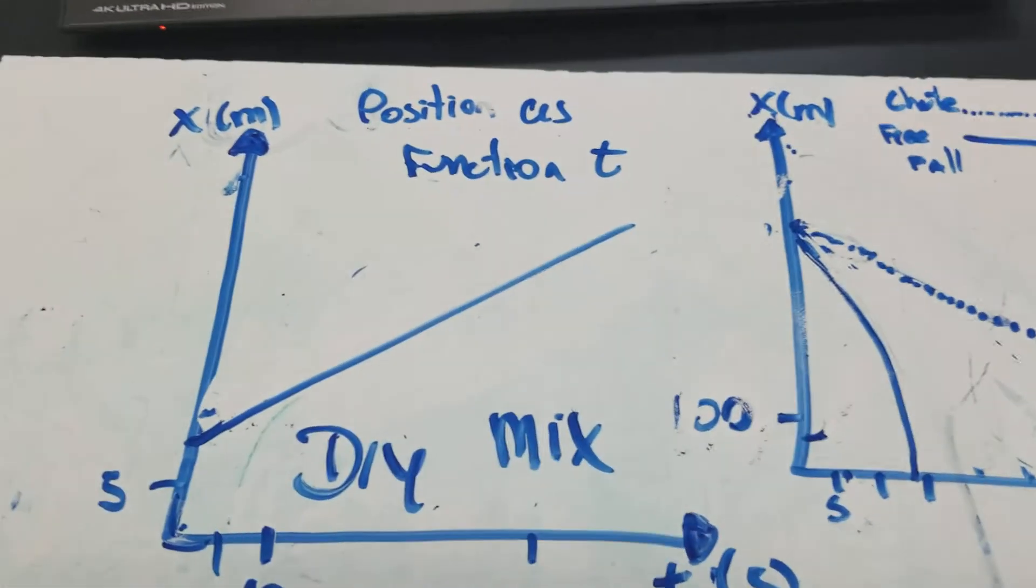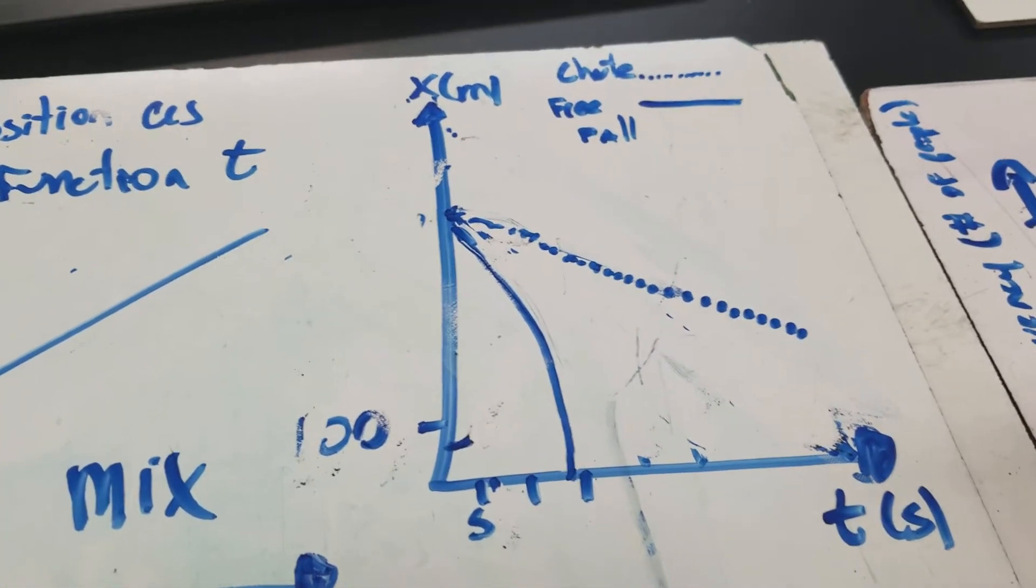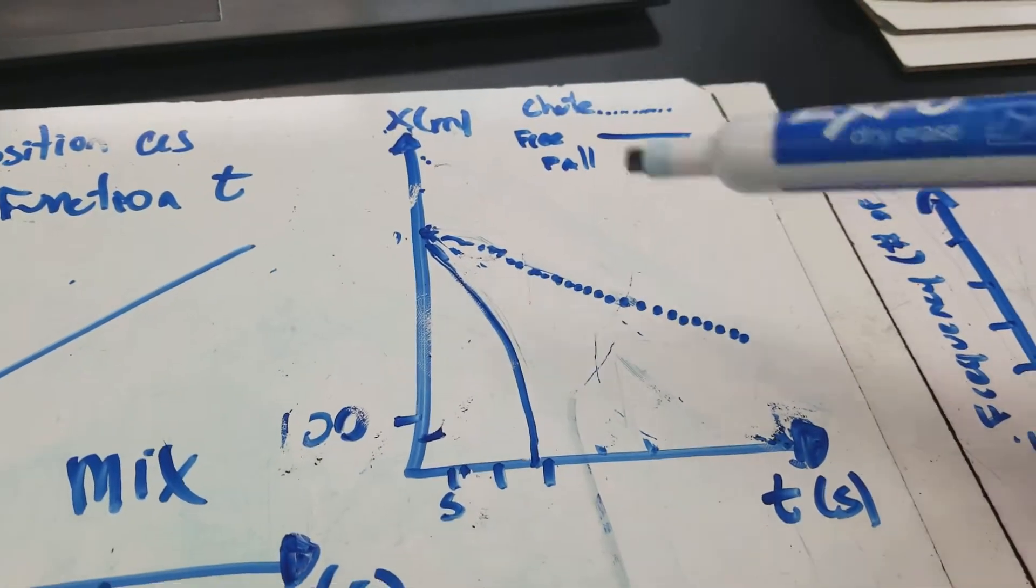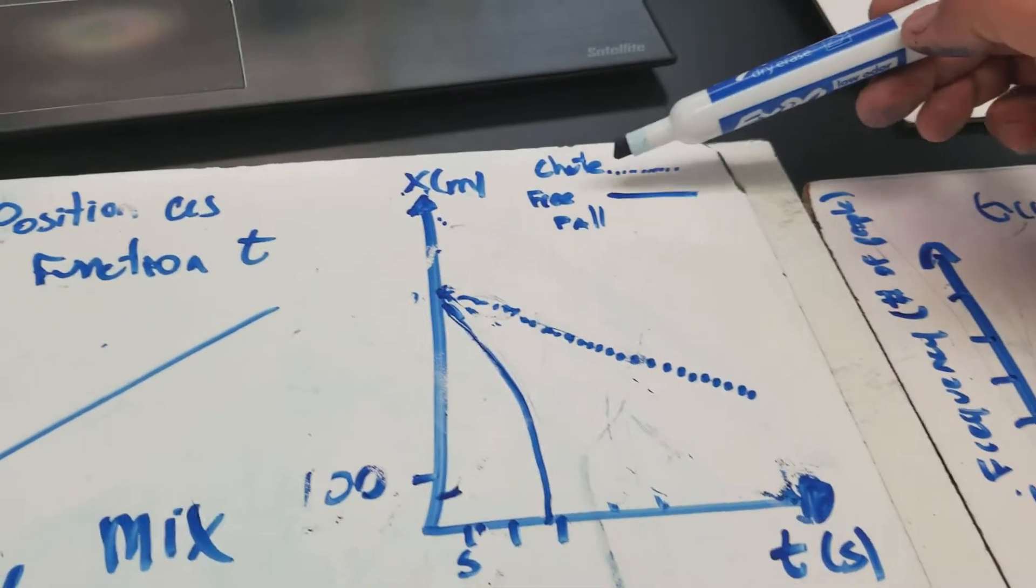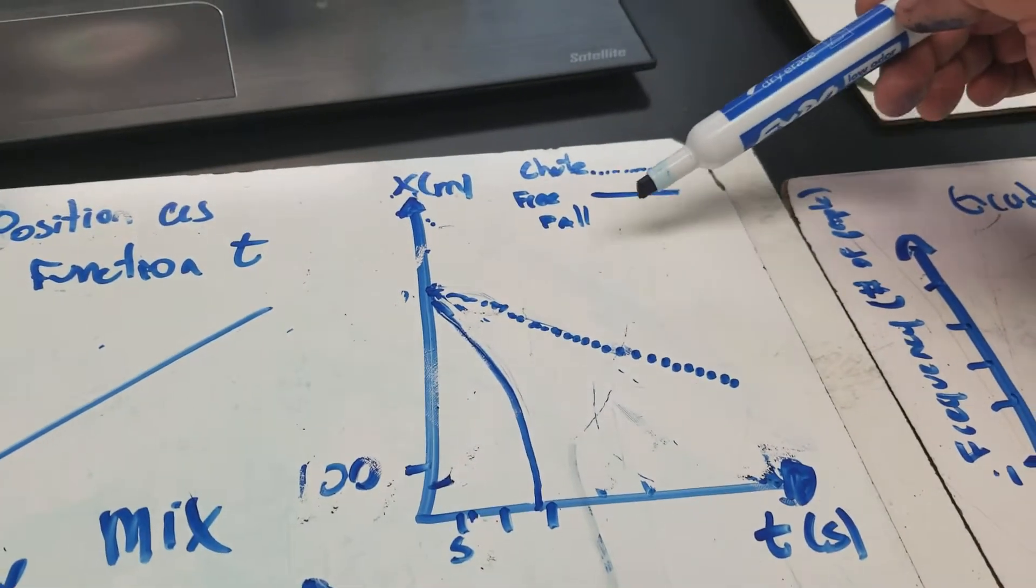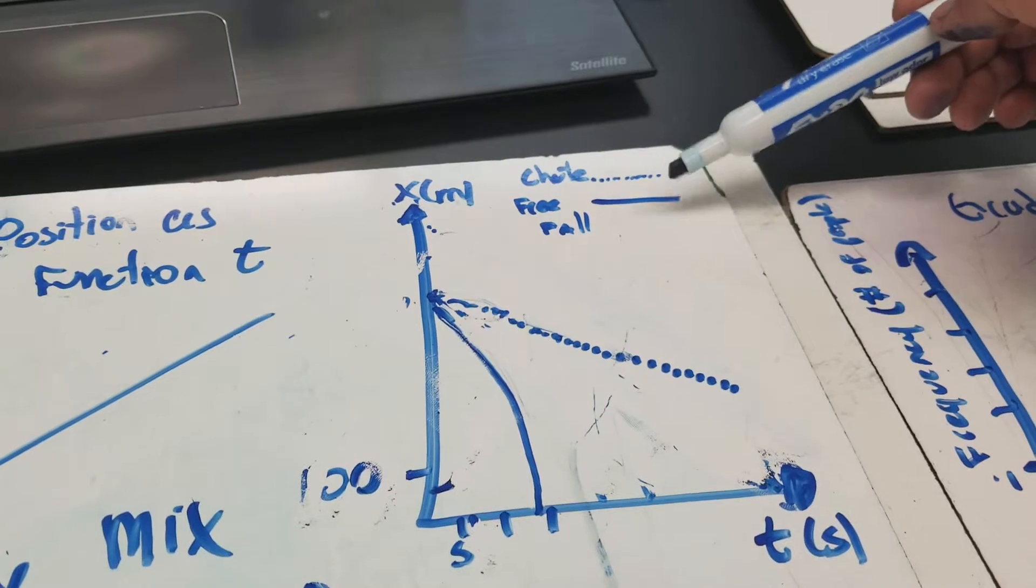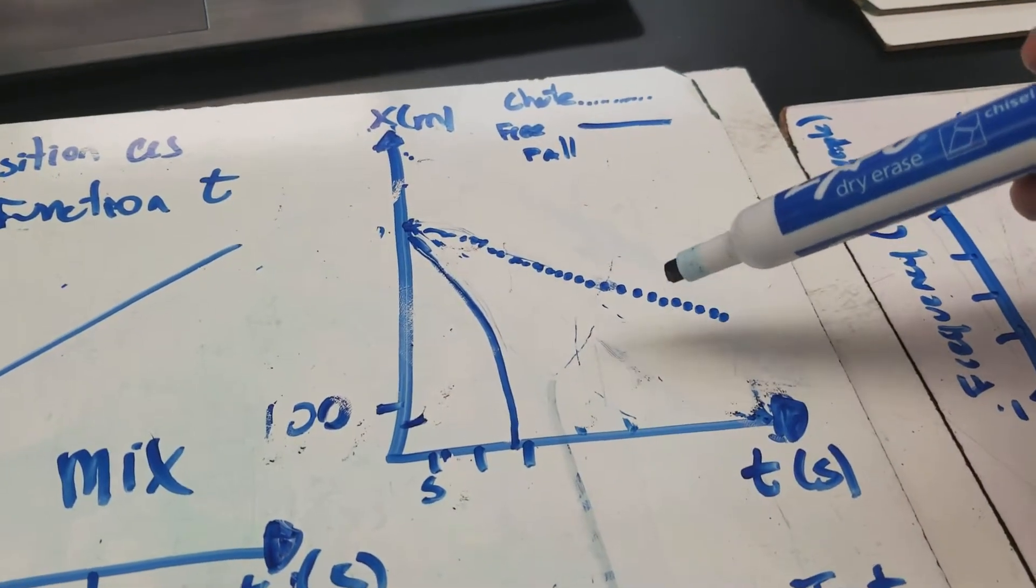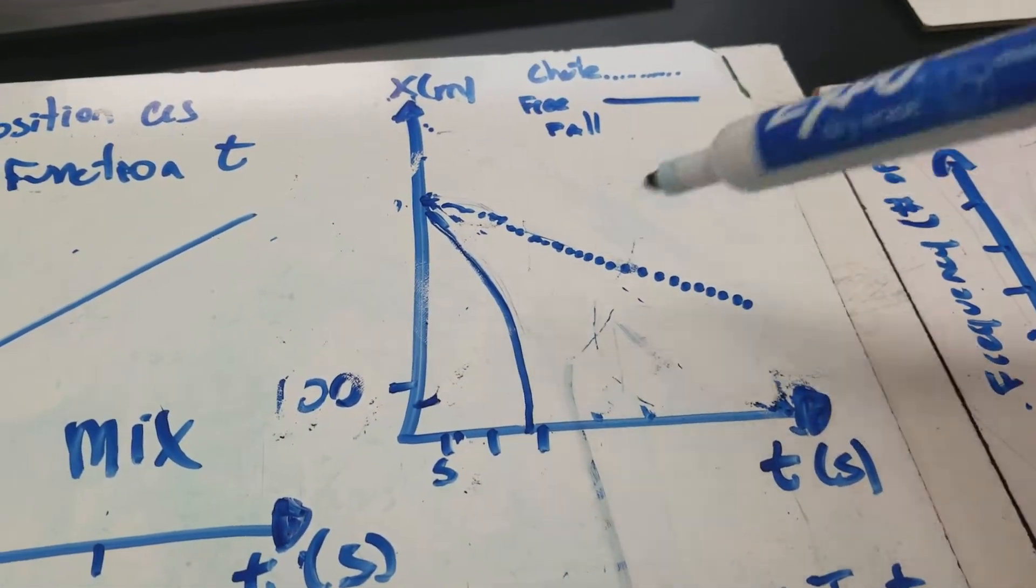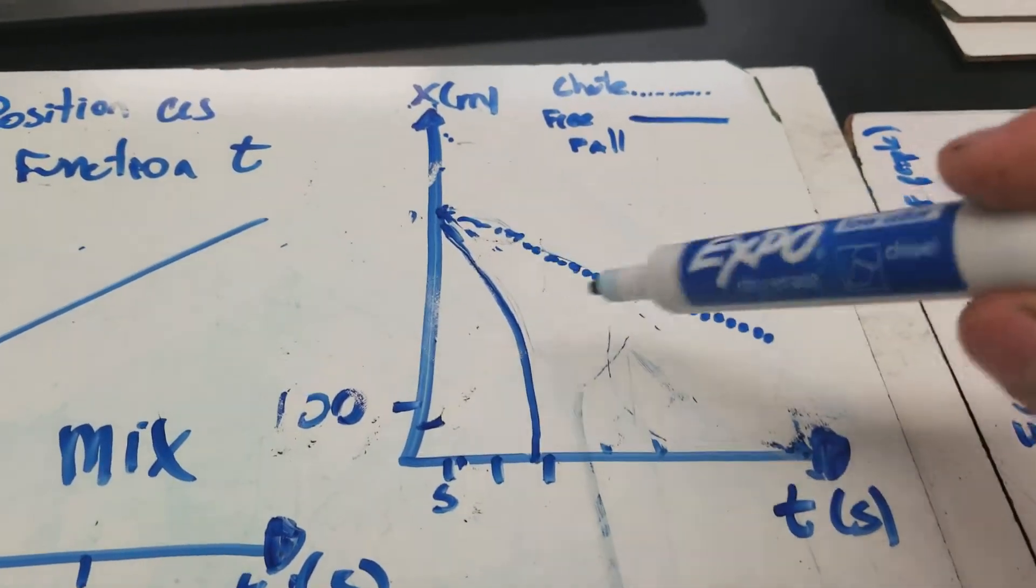But sometimes you can actually have multiple lines in a line graph. So, for example, here you see the position over time for a parachute versus an object in freefall. So you have two different lines, and you just label them differently. So I'm using multiple line graphs to compare two things or multiple things measured more than once, right?